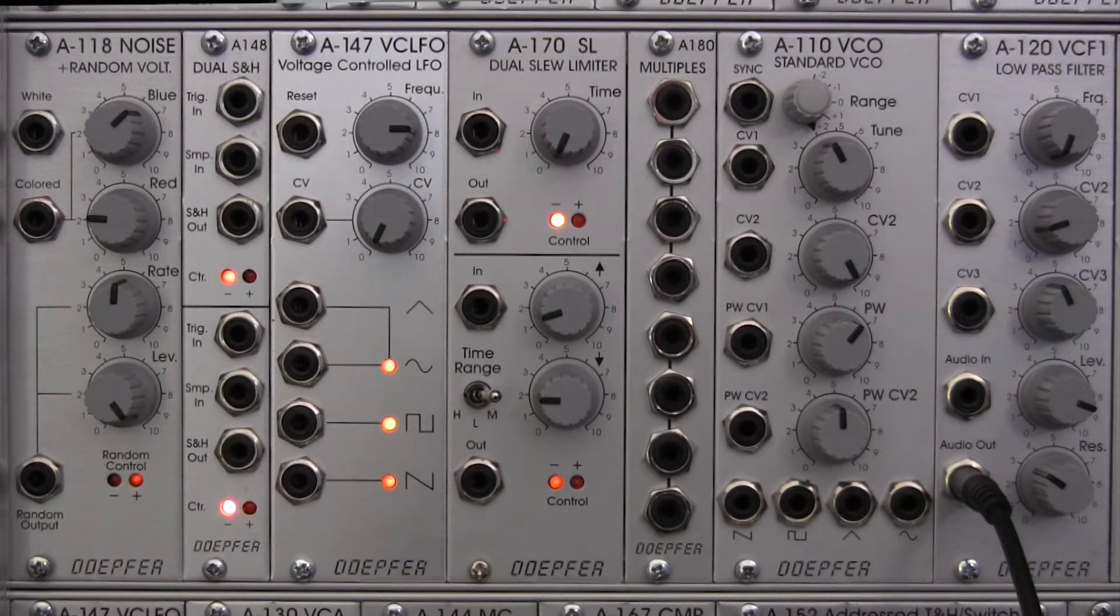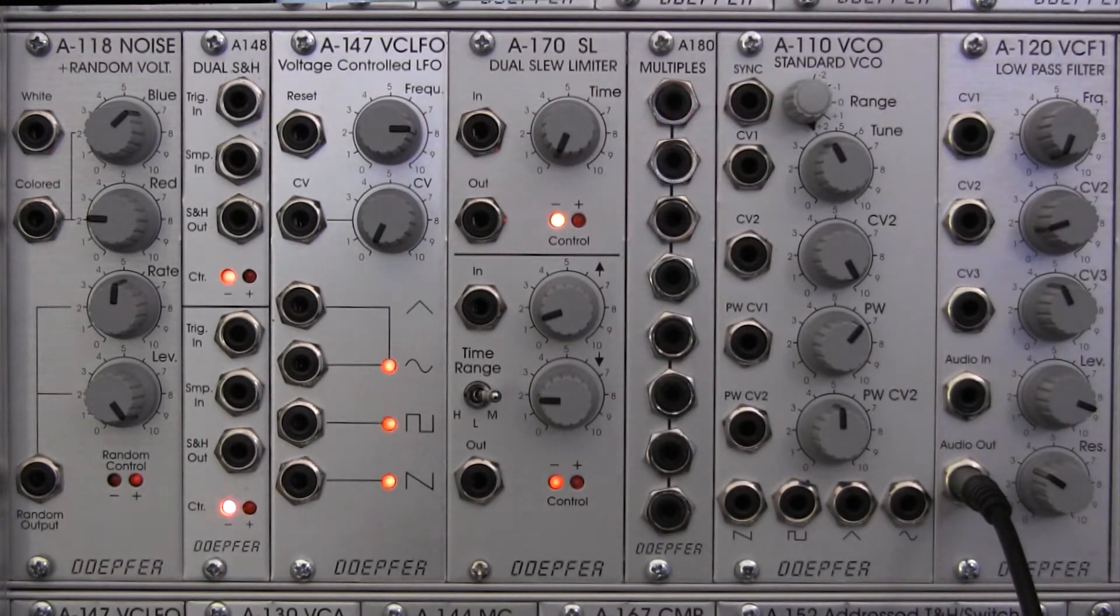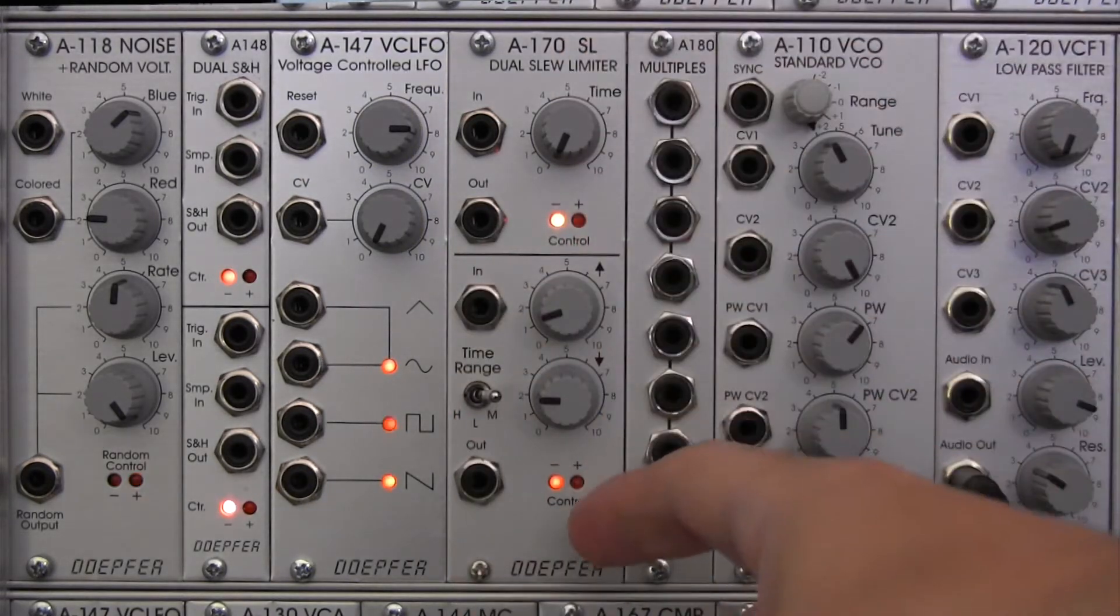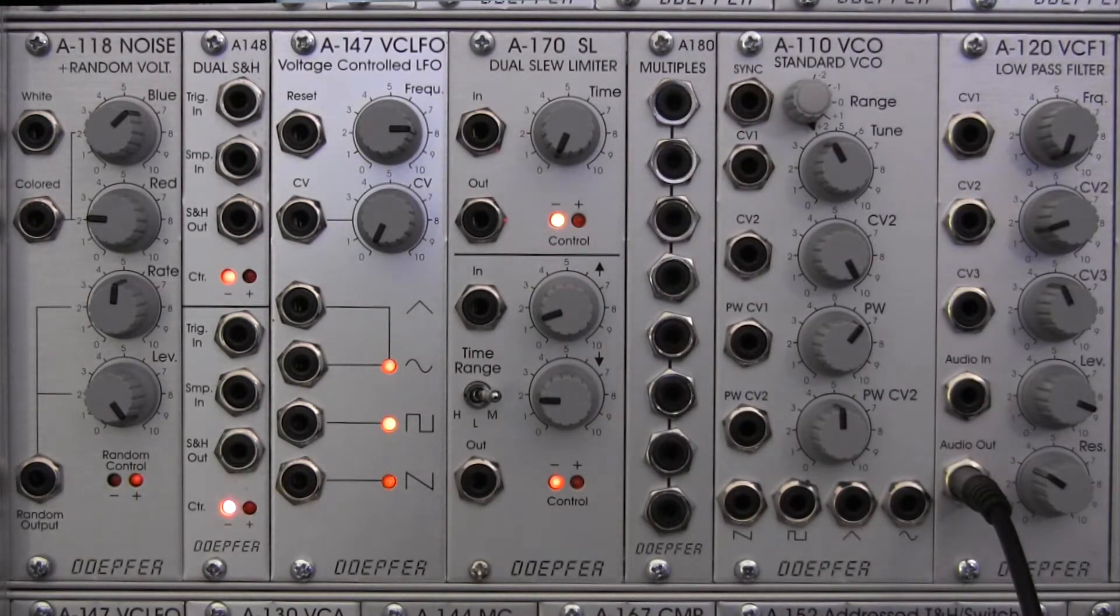This time we're going to be looking at some oscilloscope views and an audio demonstration of the Doepfer A170 dual slew limiter pictured right here. In the last video, we looked at the basics of this module, what all of these dials do, and what the function of a slew limiter in general is. If you have questions about that, check out the previous video. Otherwise, we're going to jump right into our audio demonstration and oscilloscope views.